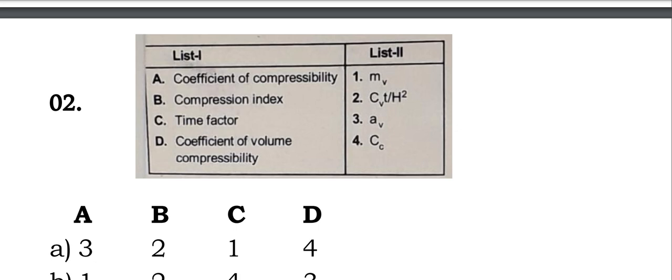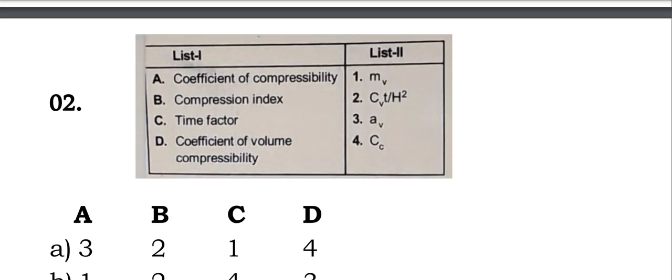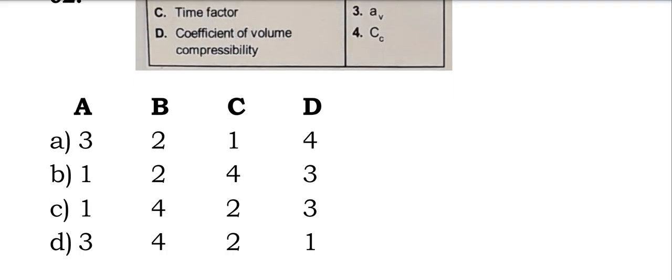Compression index is denoted as Cc, so B is 4. Time factor is Cv times t divided by d square, so C is matching with 2. Coefficient of volume compressibility is Mv, so D is matching with 1. The correct answer is D: 3, 4, 2, 1 is the correct answer. Option D is the correct answer.